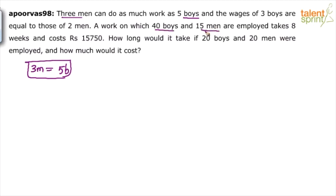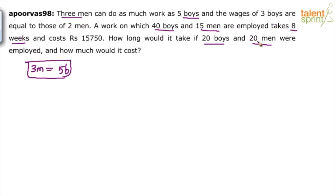A work on which 40 boys and 15 men are employed takes 8 weeks. The cost is Rs. 15,750. How long would it take if 20 boys and 20 men were employed? So we are focusing on the part: 3 men can do as much work as 5 boys. A work on which 40 boys and 15 men are employed takes 8 weeks — how long would it take if 20 boys and 20 men were employed?